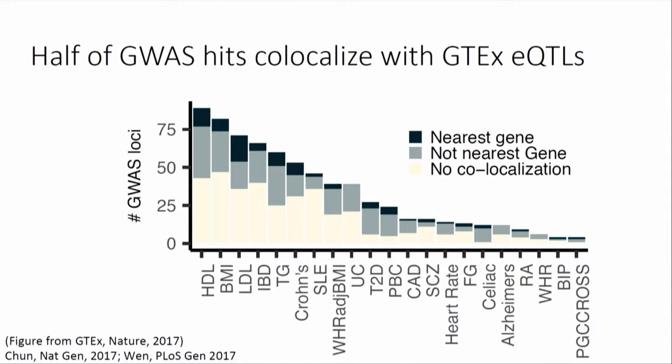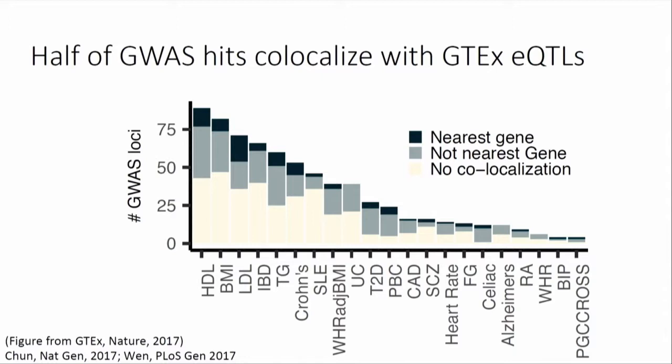Doing this, we took a large catalog of GWAS hits and intersected them with all of the EQTLs from every tissue in GTEx v6, using co-localization. What we found is that about half of the GWAS hits do appear to co-localize with some EQTL in some tissue in GTEx. And one very important note is that in many cases, it is in fact not the nearest gene that co-localizes with the GWAS association. So the simple interpretation of taking a GWAS hit and just picking the nearest gene is going to be wrong about half the time, even when the GWAS hit does co-localize with an EQTL.